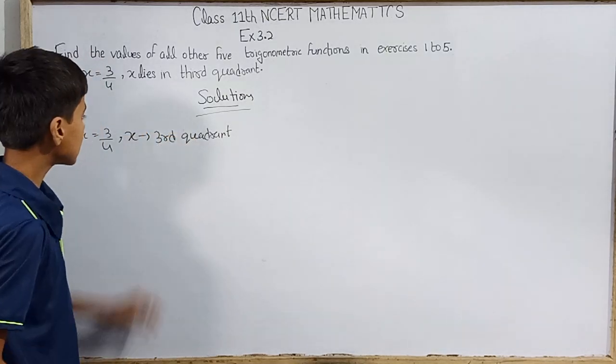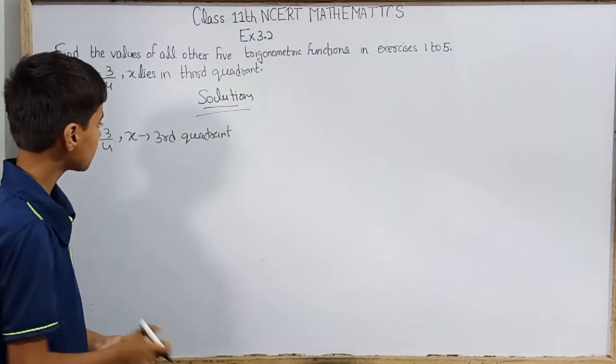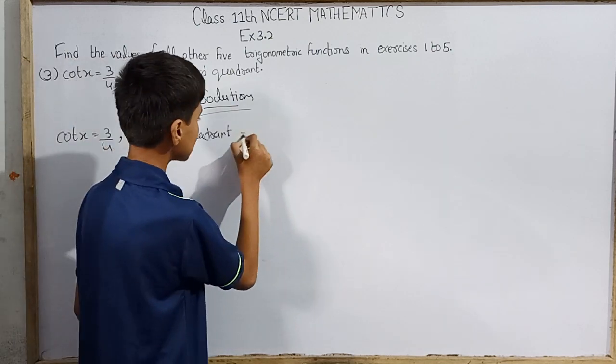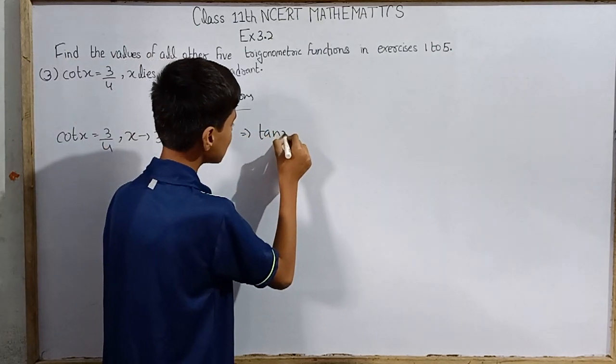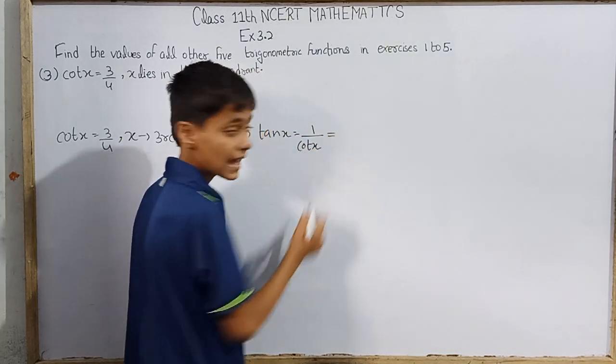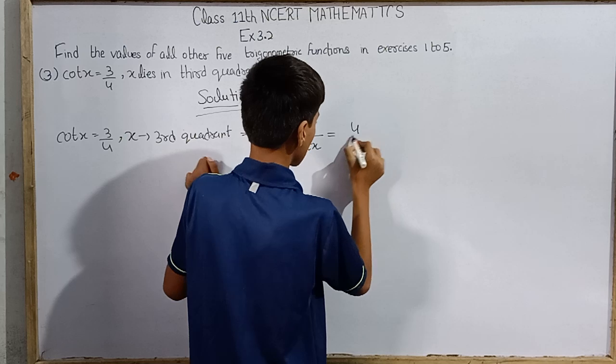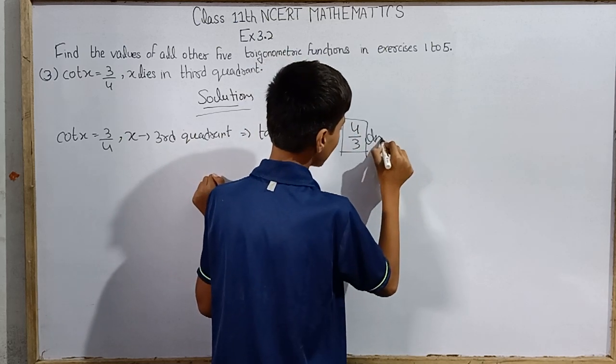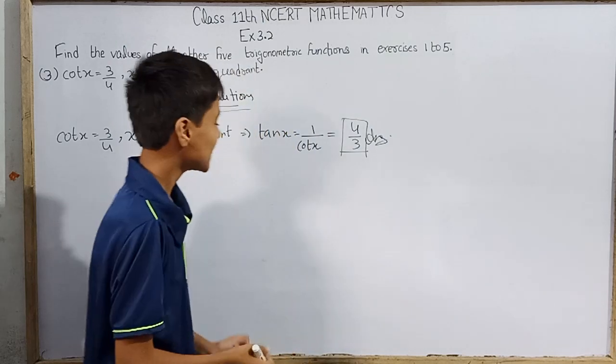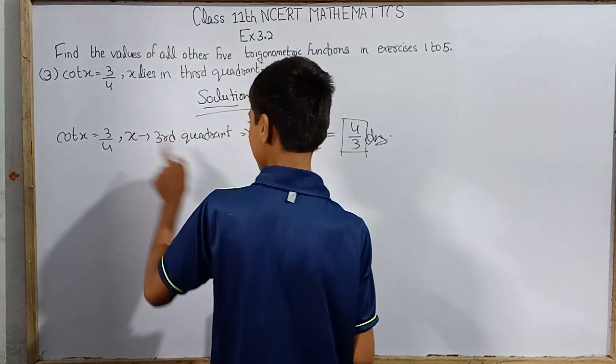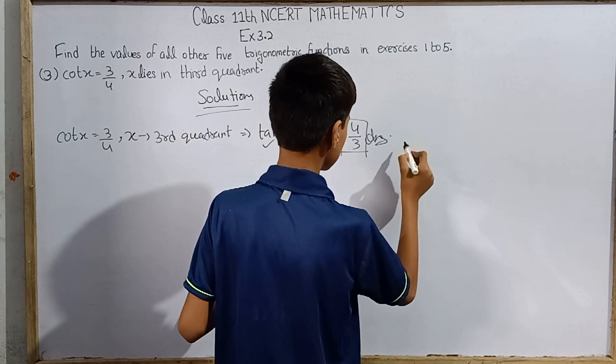So here we have to find the rest of the five trigonometric functions. First, we solve for tan(x). Easily, tan(x) is 1 over cot(x), which means 1 over this number, 4/3. Tan(x) was very easy. Although it was easy, tan(x) is one trigonometric function. We got that, and we will continue.